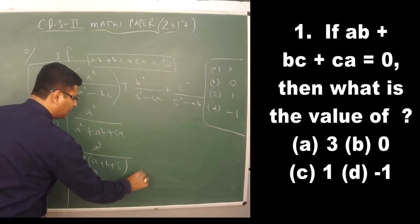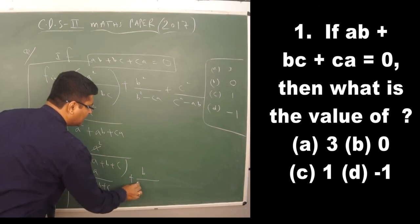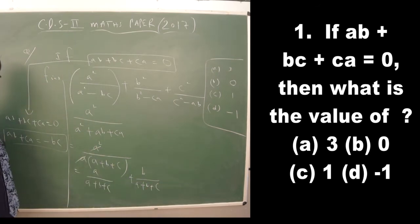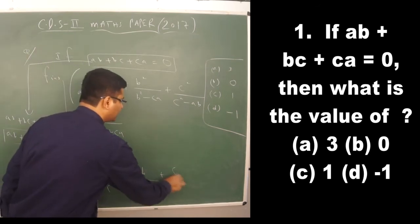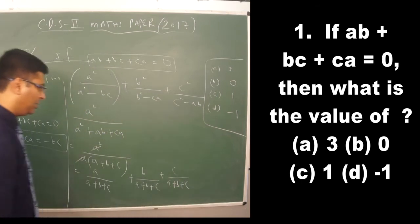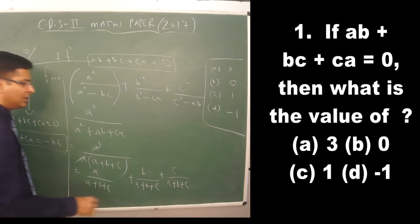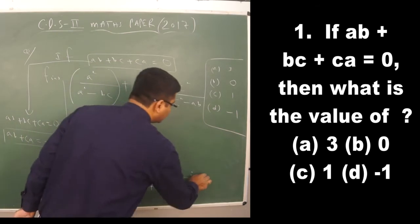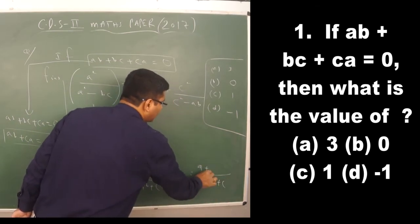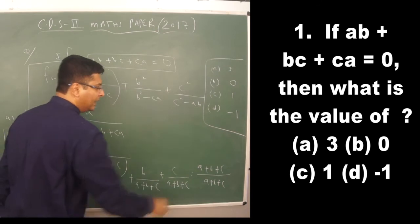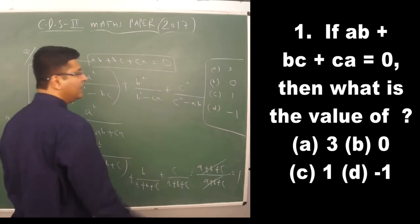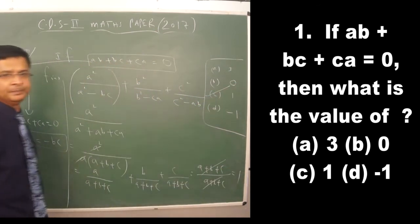Similarly, the second term simplifies to b/(a+b+c) and the third to c/(a+b+c). All three share a common denominator of (a+b+c), so the sum becomes (a+b+c)/(a+b+c) = 1, which is option C.